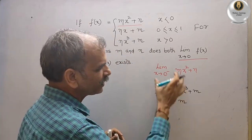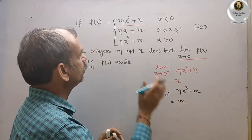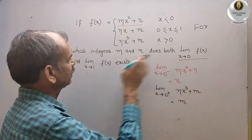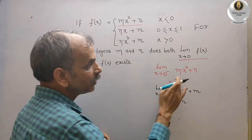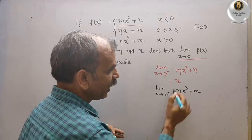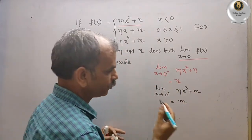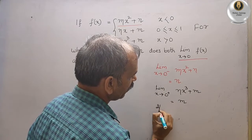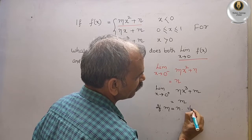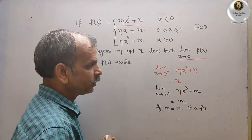So the limit from the left and right at x = 0 are both equal to m. Since they asked for what integers m and n does both limits exist, and they are both equal to m regardless of n, the limit at x = 0 exists for any integer m. If m is equal to n, then it is a function.